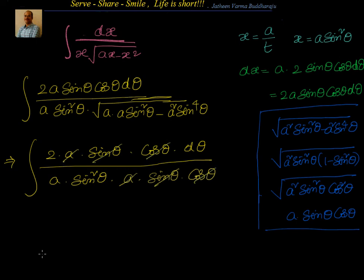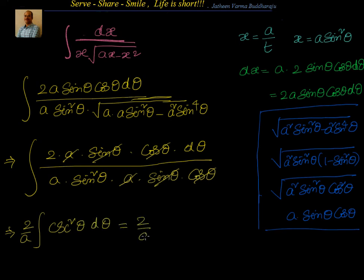Now sine theta, sine theta, cosine theta, cosine theta, and a all cancel out, so what I am left with is 2 by a times cosecant square theta d theta. We know that the integration of cosecant square theta is nothing but equal to minus cotangent theta plus c.